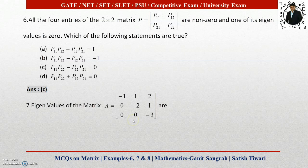whenever we have an upper triangular matrix, lower triangular matrix, or diagonal form, the entries in the principal diagonal are the eigenvalues for the given matrix. So the eigenvalues will be -1, -2, and -3. So option D is correct here.